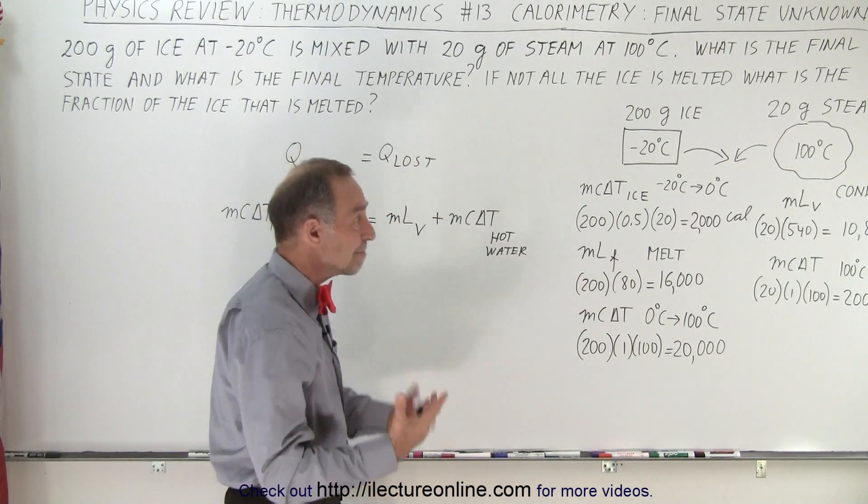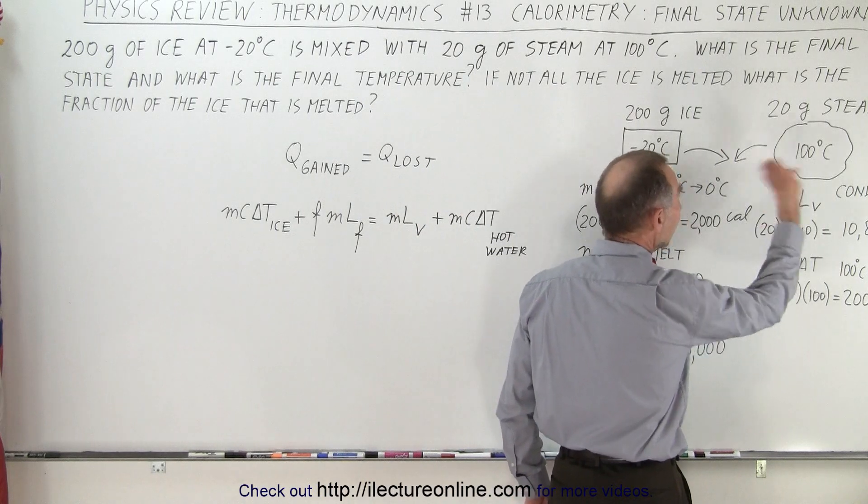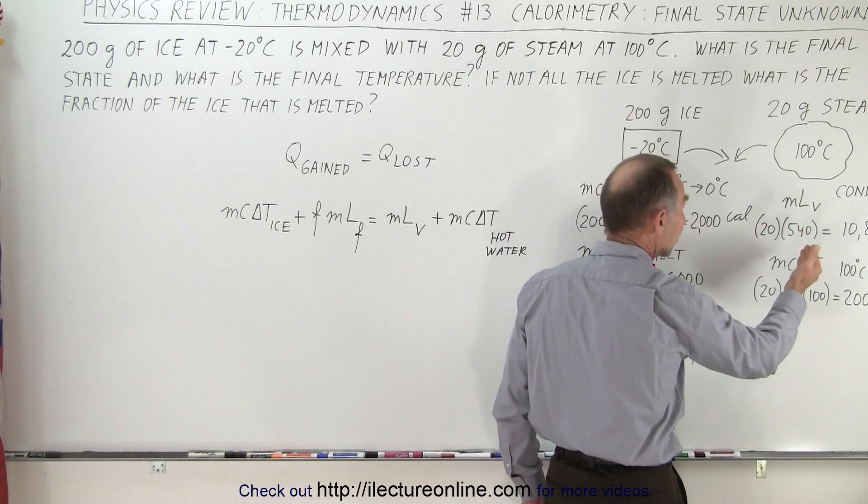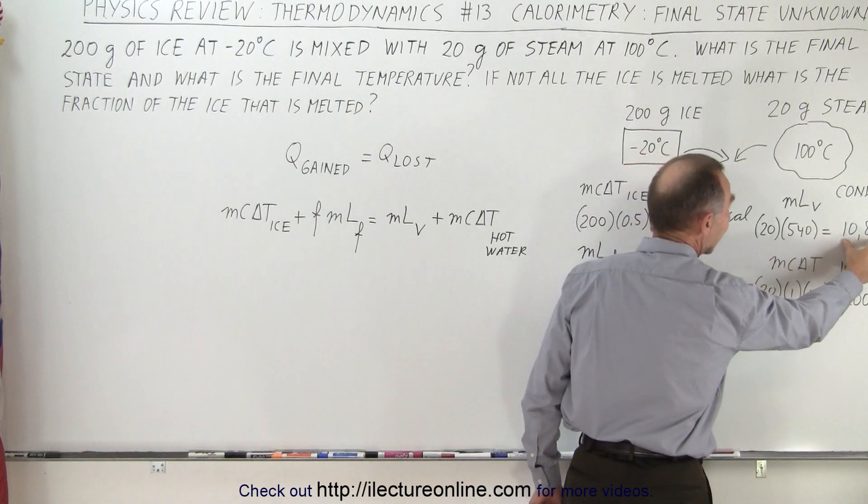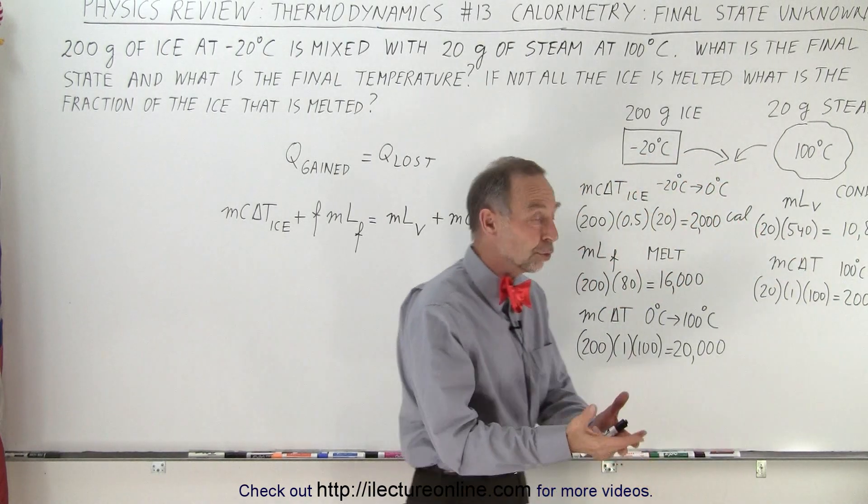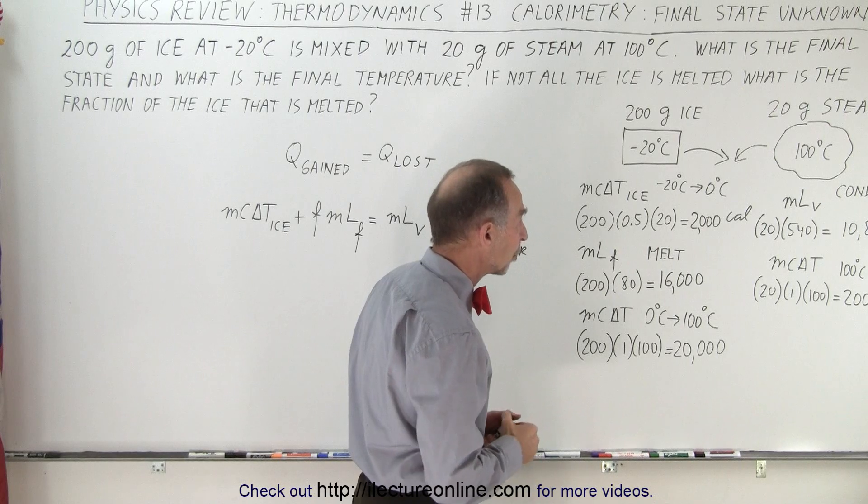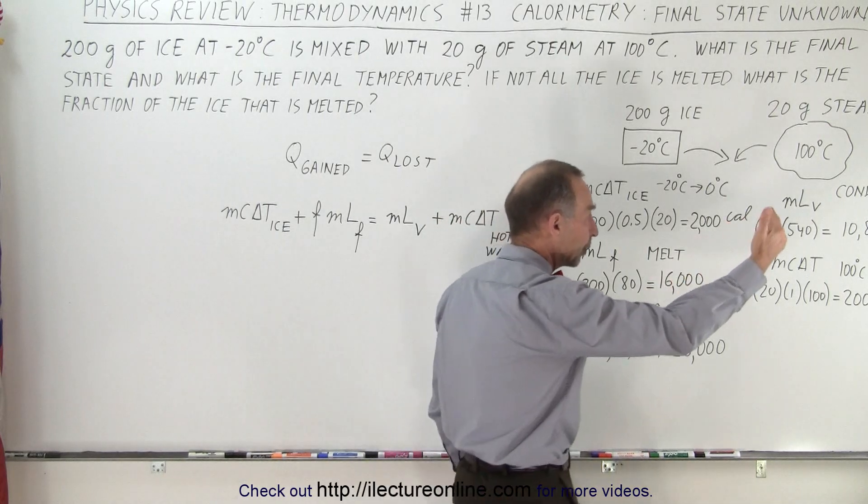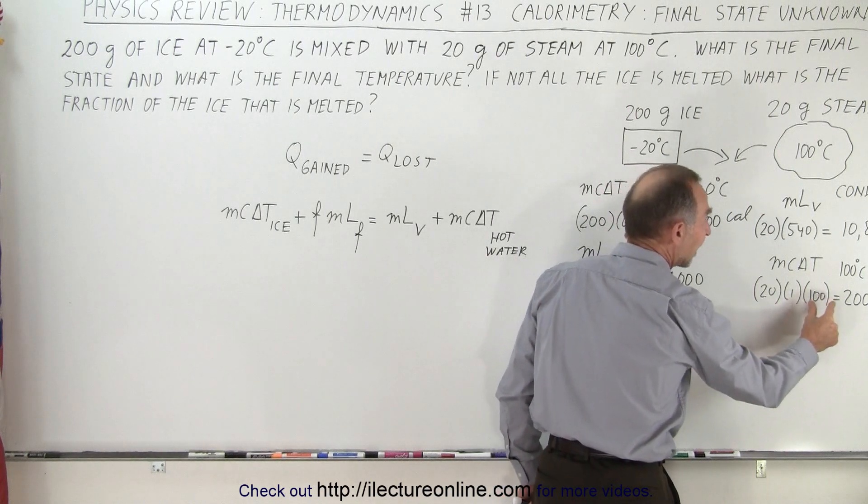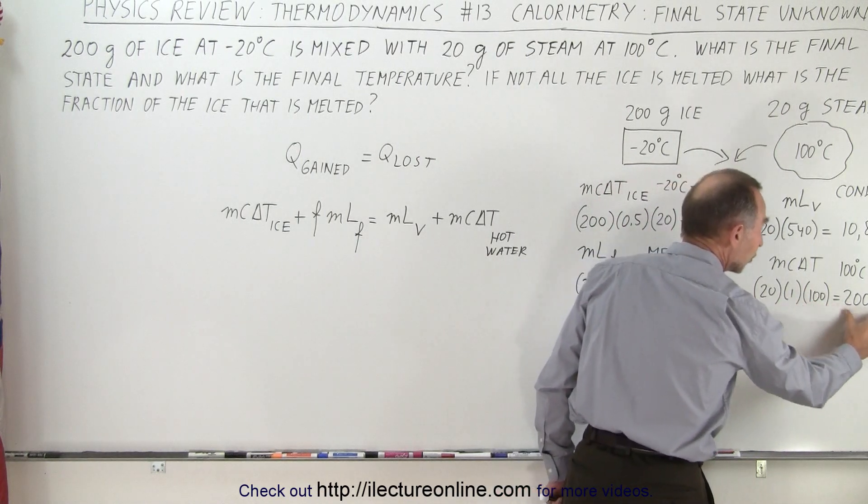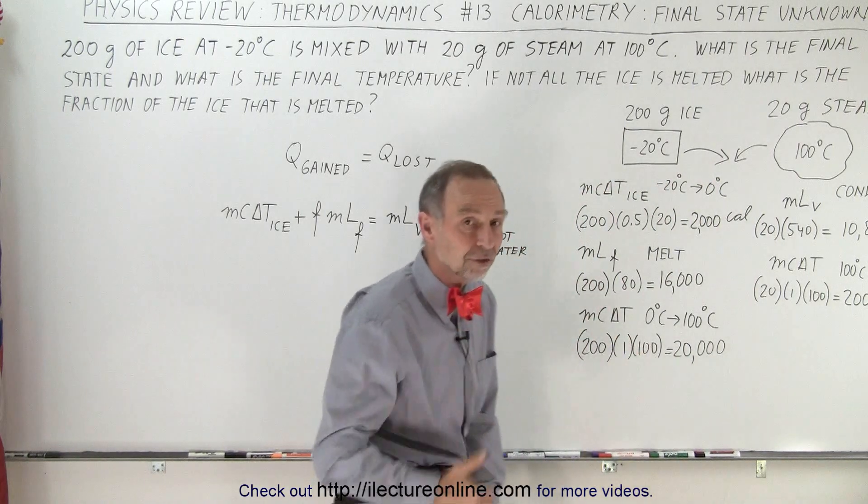Now, we have steam. We have 20 grams of it, and to condense the steam to water at 100 degrees Celsius, we multiply times the latent heat of vaporization, and it takes 10,800 calories to condense the steam into water. And then to take that all the way down to 0, we take 20 grams times the specific heat of water times the change in temperature. It takes another 2,000 calories to get it all the way down to 0.